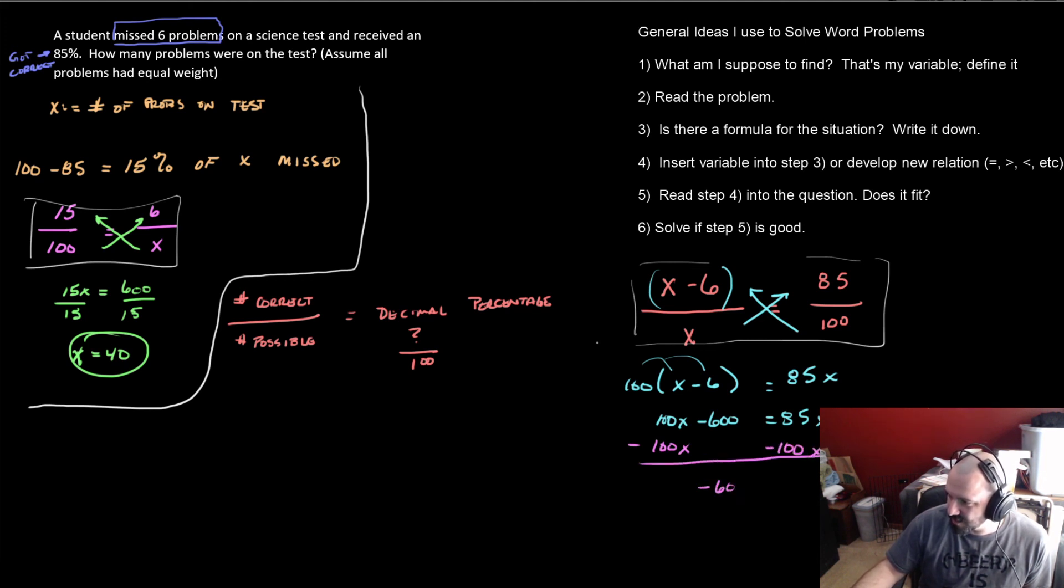When I do that, I get negative 600 is equal to negative 15X, which is really this statement here. Divide both sides by negative 15, and that's going to give me a positive 40. Negative divided by negative is a positive. And there's my answer.